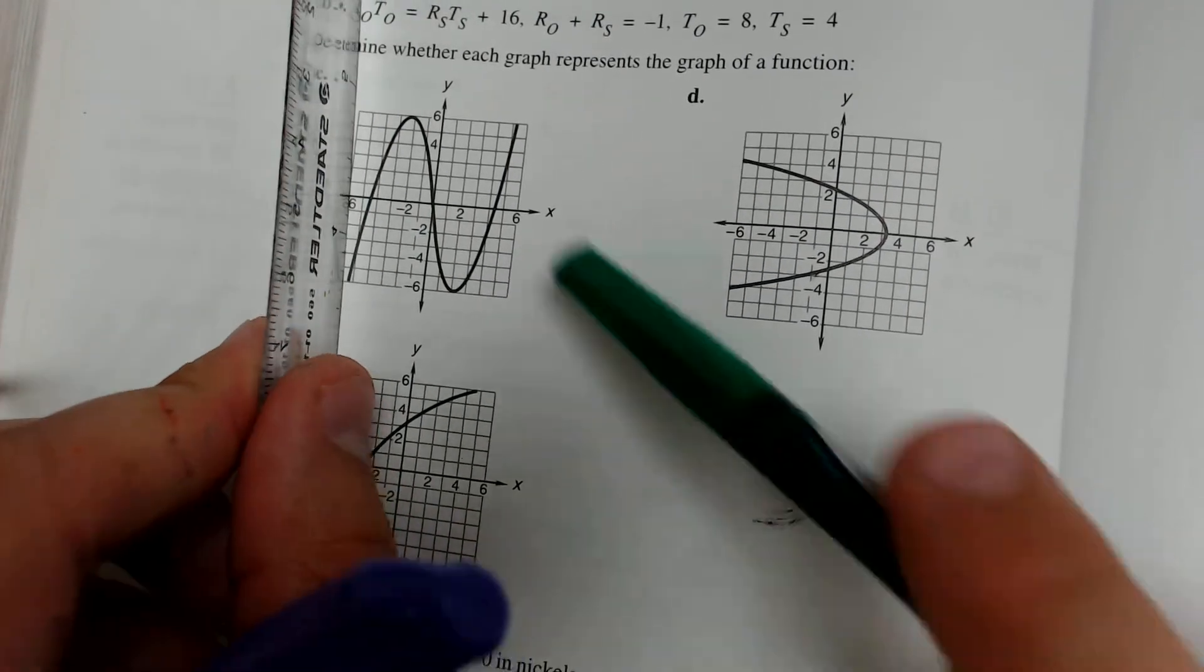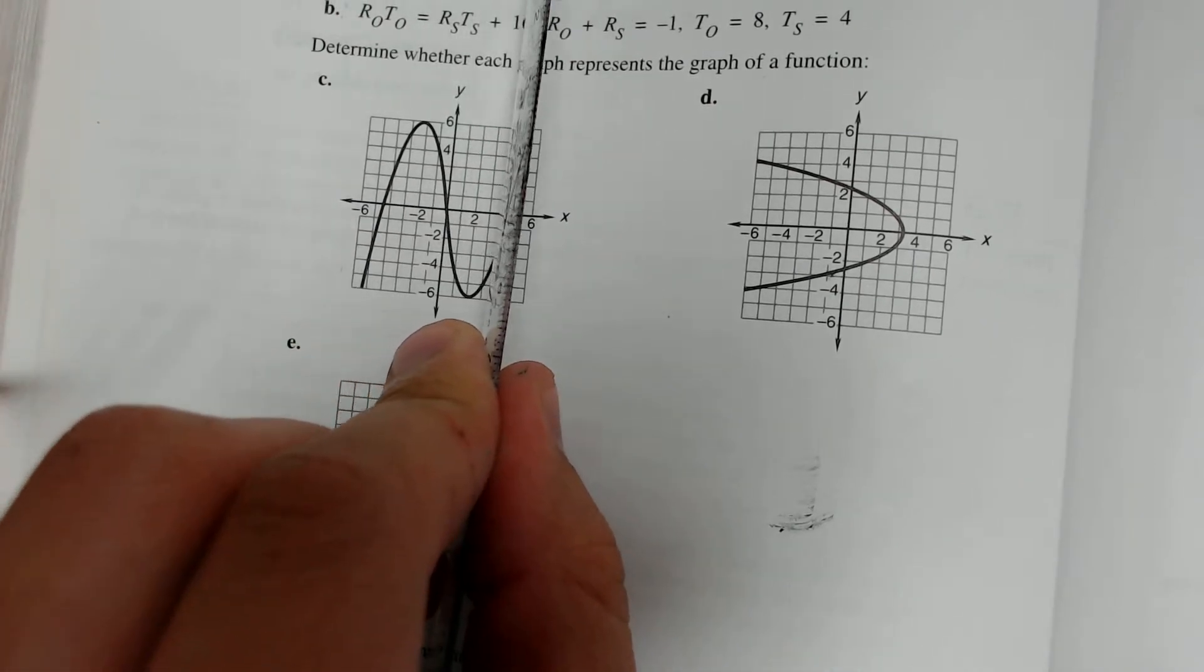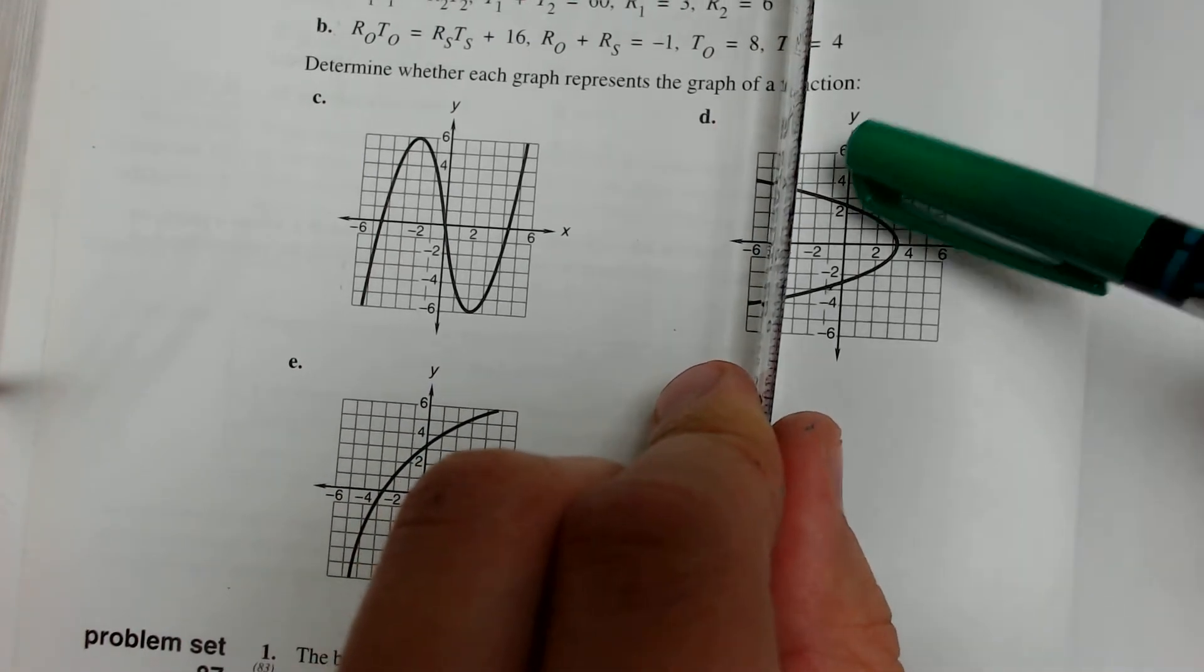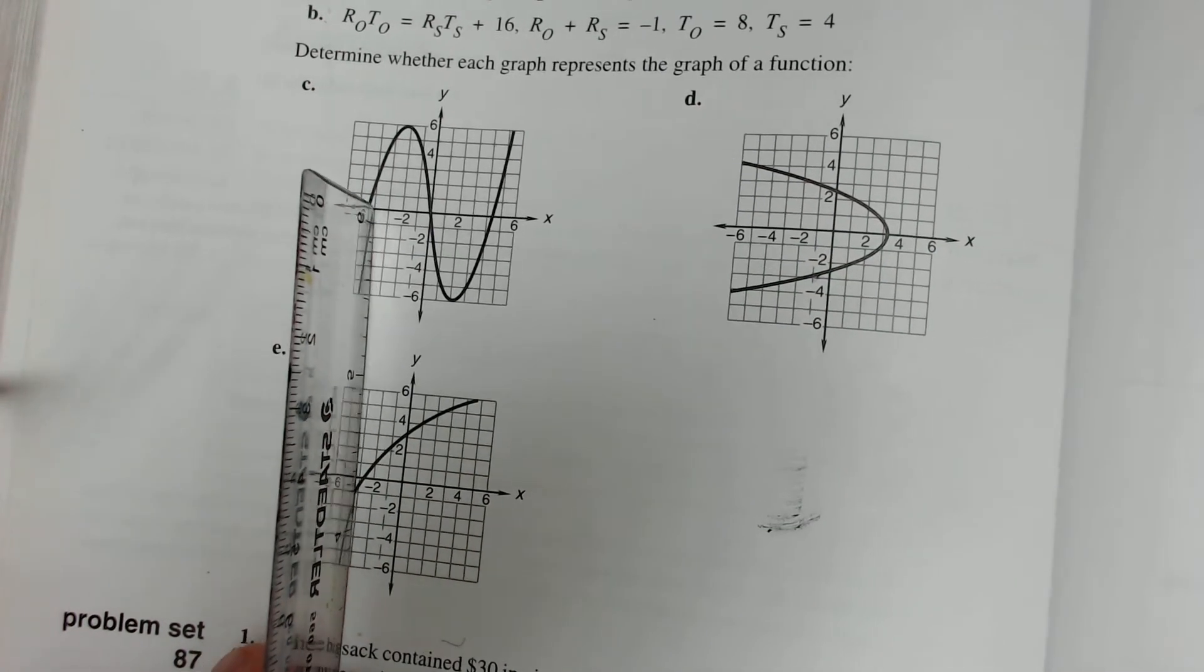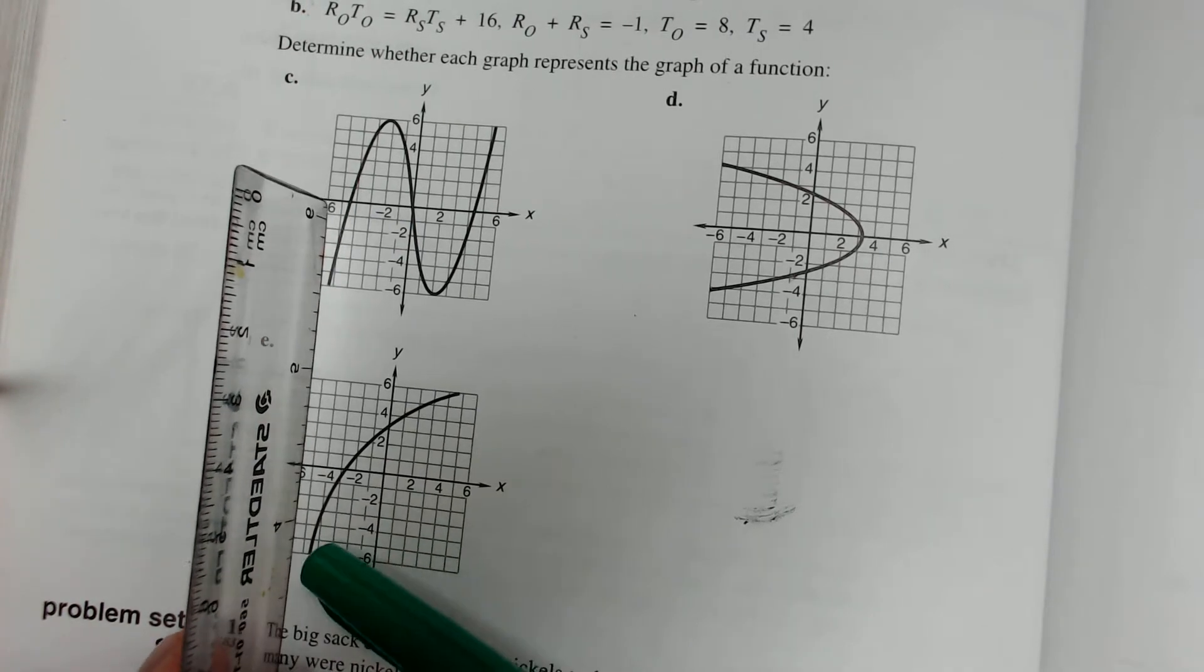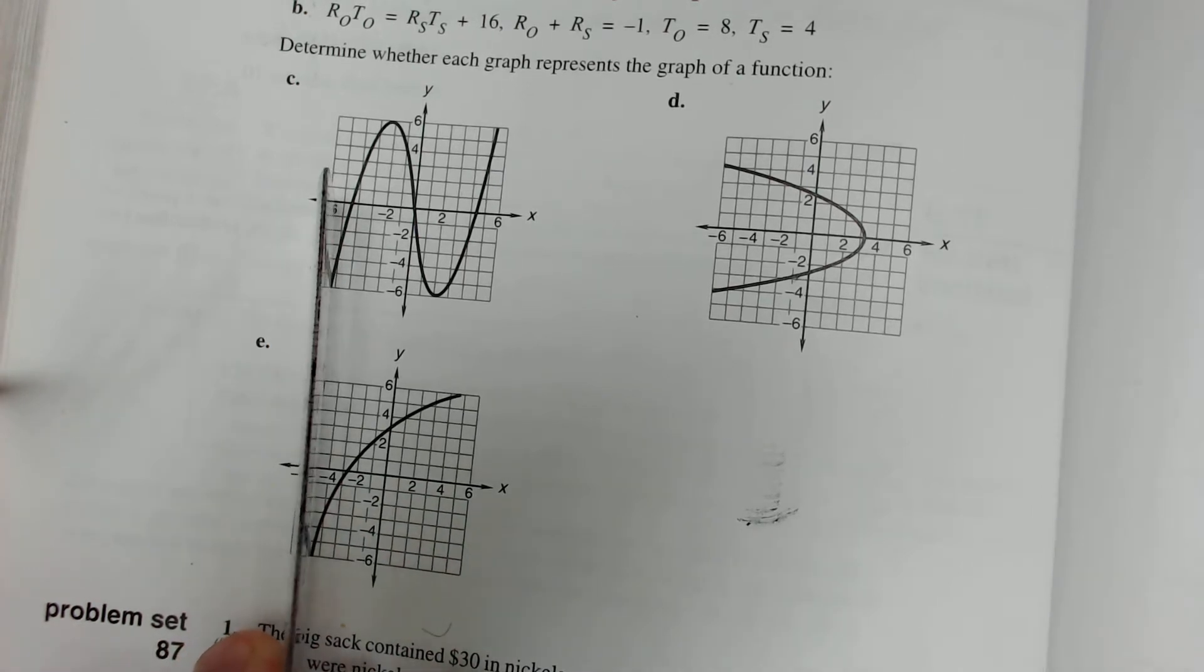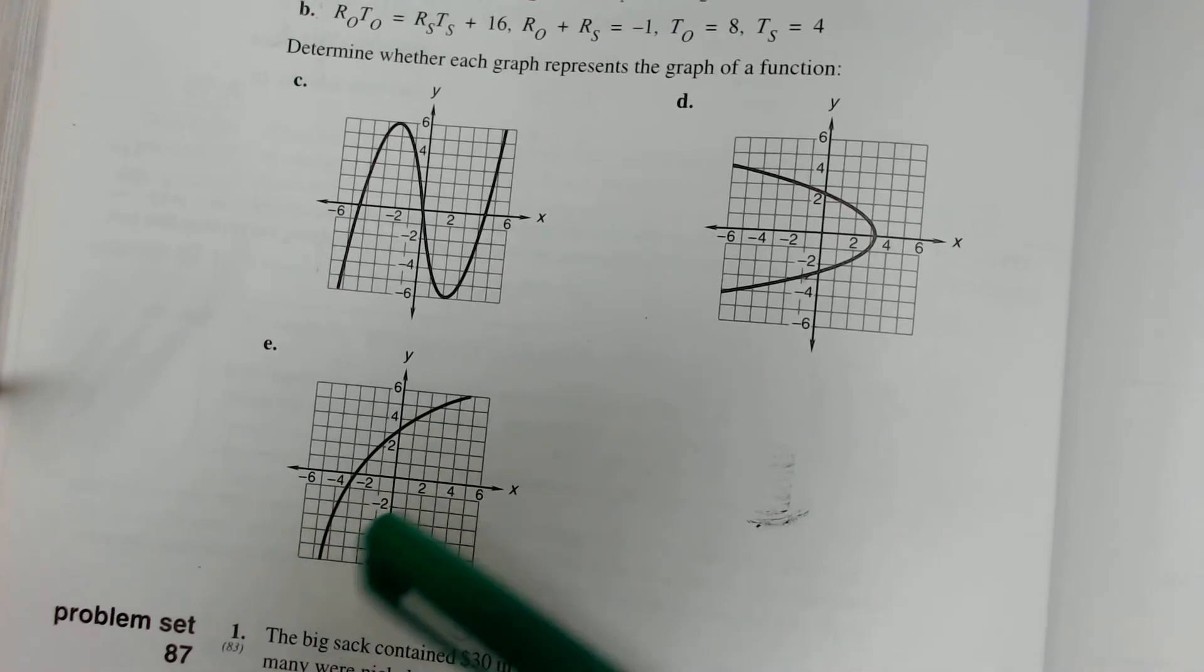This one right here, if we trace this one, we see we're only touching it at one point the whole way, so this is a function. This one, as soon as I start, I'm touching it at two points at the top and at the bottom. This is not a function. Last one, if I go to trace it right here, you might think this line is almost straight, is that two points? No, it's slightly curved, which means the line is only ever touching it at one point. Then as I keep tracing, we're still only touching it at one point, so this is a function.